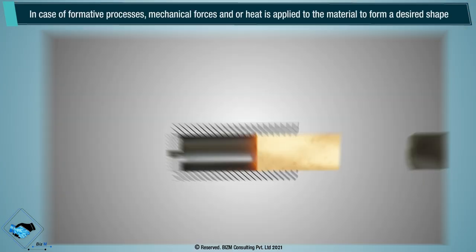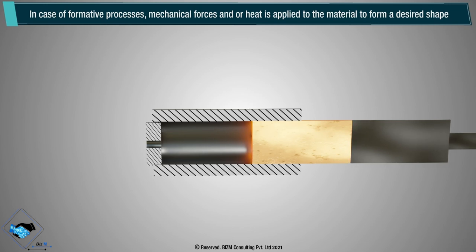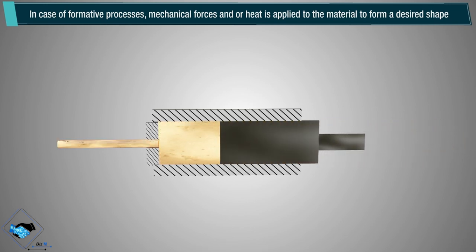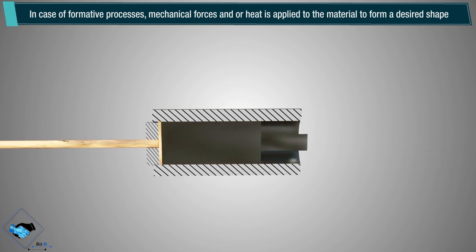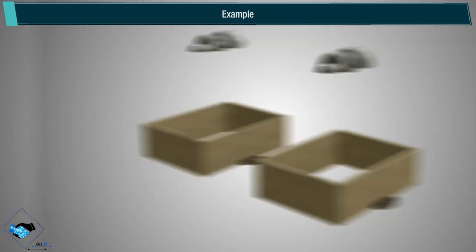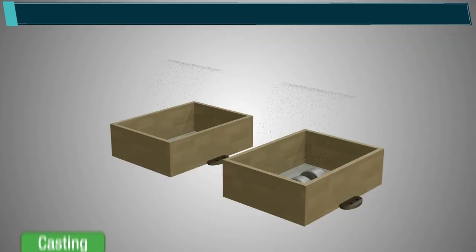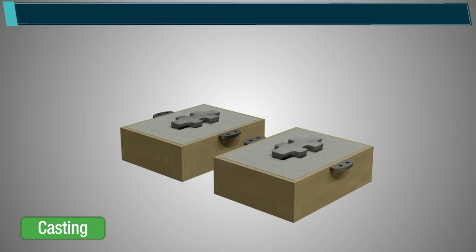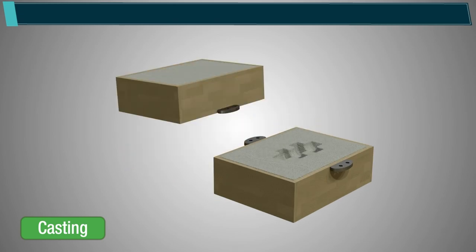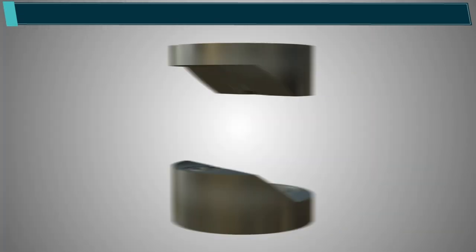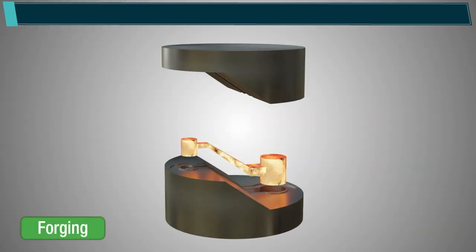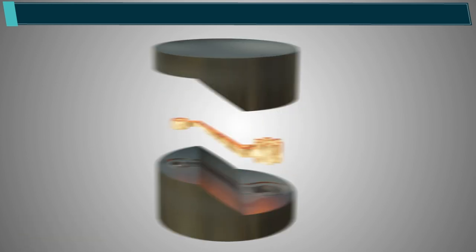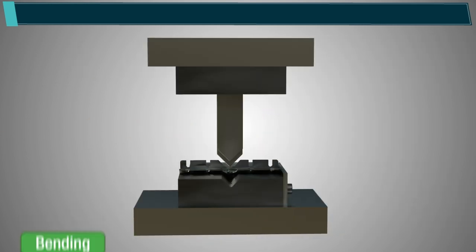In formative processes, mechanical forces or heat is applied to the material to form a desired shape. Examples include casting, forging, and bending.